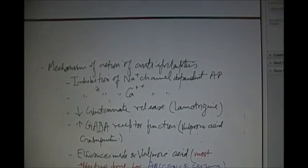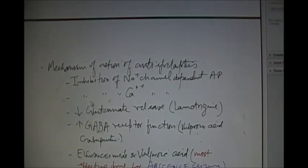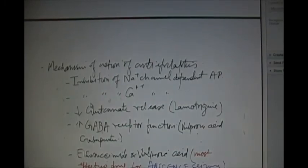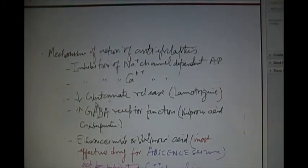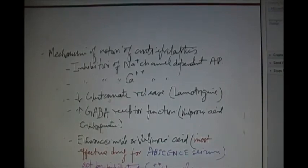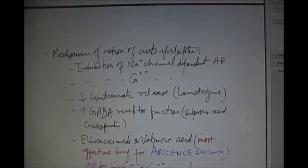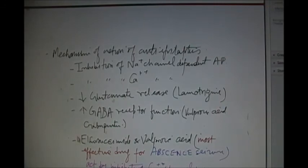Anti-epileptic drugs act by several mechanisms: number one, they inhibit sodium channel-dependent action potentials; number two, they inhibit calcium channel-dependent action potentials; number three, they decrease glutamate release — for example, lamotrigine decreases the release of glutamate; number four, they increase GABA receptor function — for example, valproic acid and gabapentin. GABA increases the seizure threshold whereas glutamate decreases it. Ethosuximide and valproic acid — valproic acid being the most effective drug for absence seizures — act by inhibiting calcium channels in thalamic neurons.